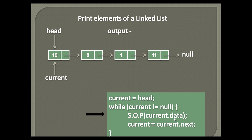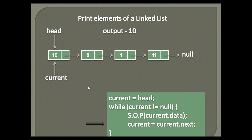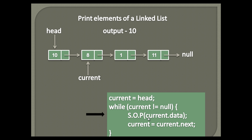The first statement prints the data of the current node on the console. Currently, current node points to head, and current's next points to the second node. The second statement assigns current's next node to current — that is, it traverses the current node to the second node. Now again it checks the while loop condition. Current node points to the second node, which is not null. Therefore it again executes the statements in the while loop as demonstrated.